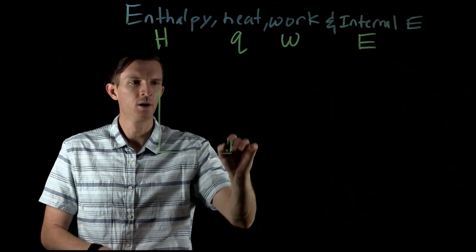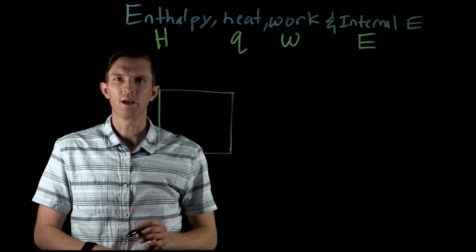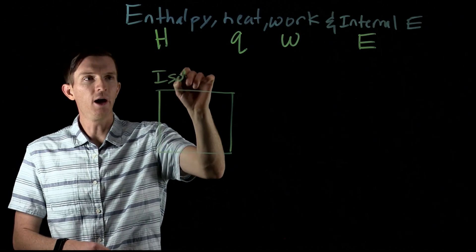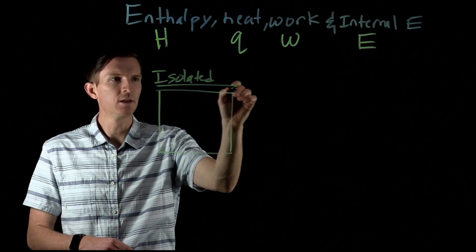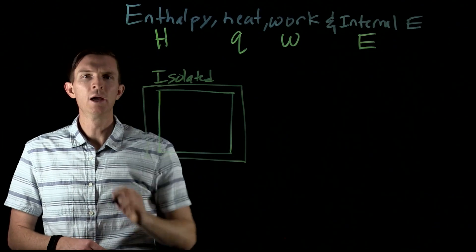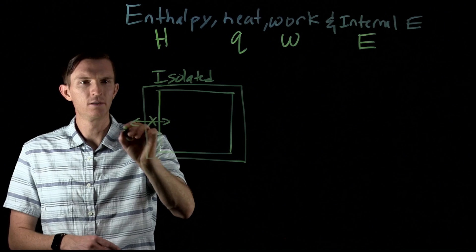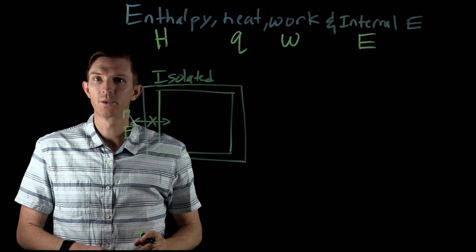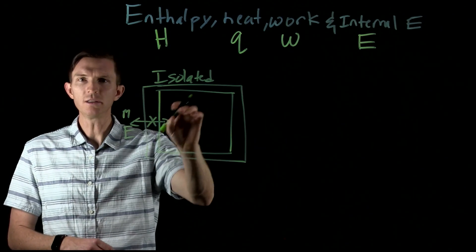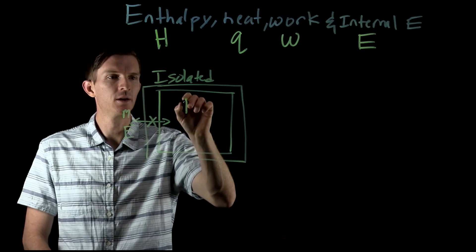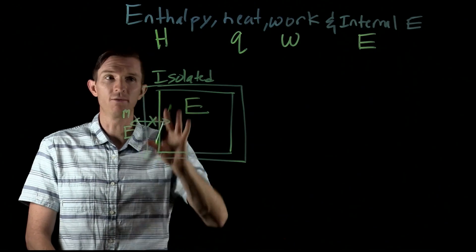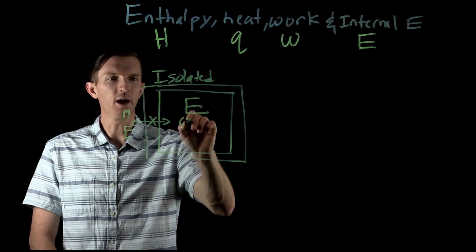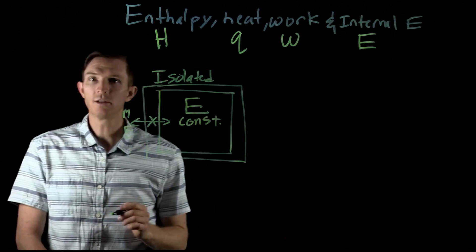Let's say we have a system here. If our system is an isolated system, we know that means it's insulated, and that means there's no ability to allow mass or energy to go across this barrier. Well, inside of my system I'm going to have a specific internal energy. Now if it's isolated, I have no way to allow energy to go across this. So in an isolated system, the internal energy is constant.